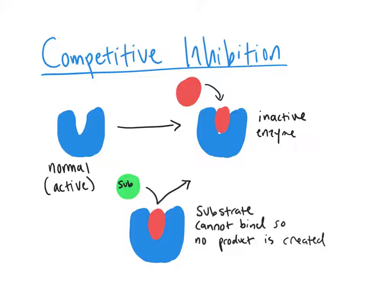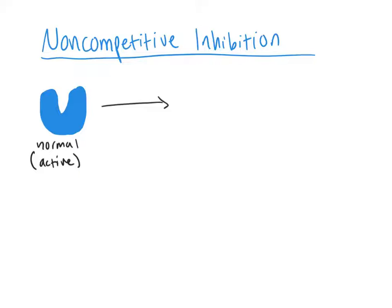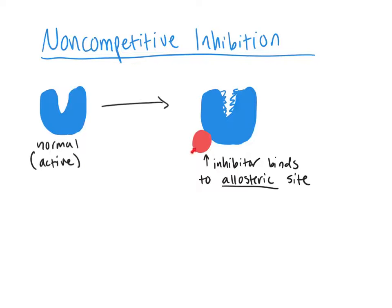Our next example is going to be non-competitive inhibition, which works a little bit differently. In non-competitive inhibition, we take our normal enzyme, which is currently active, and we have a non-competitive inhibitor bind to a site that is not the active site. You can see that the inhibitor didn't bind to the active site like in competitive inhibition, but it bound to what's called an allosteric site.